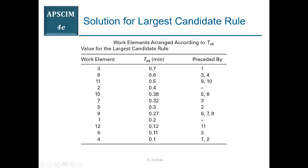This is the first step — work elements arrangement in descending order of TEK values. If you look at the table, work element number 3 has the highest operational time of 0.7 minutes and appears at the top, followed by the rest in descending order.